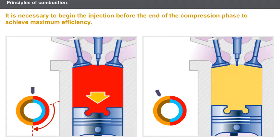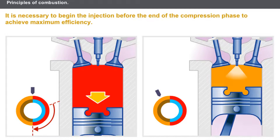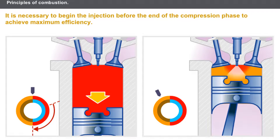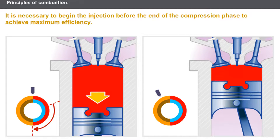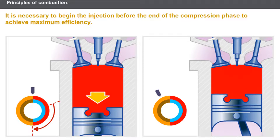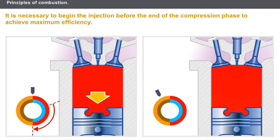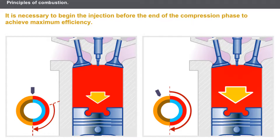If, on the other hand, the injection takes place before TDC, the combustion will be complete at TDC. The pressure due to combustion will be at its maximum and will apply throughout the power stroke. The torque produced will be greater.